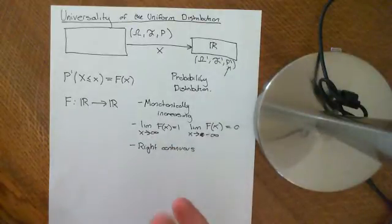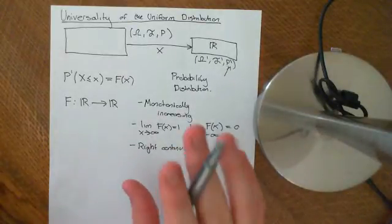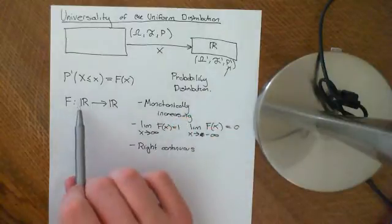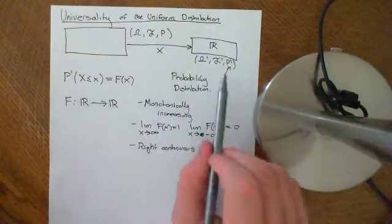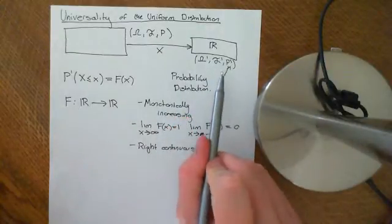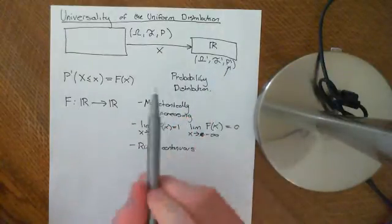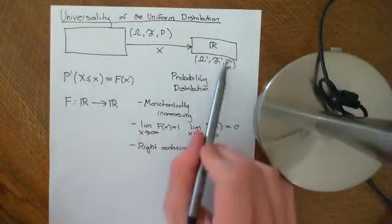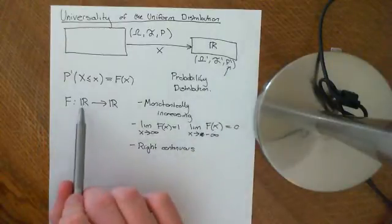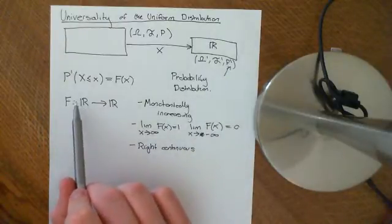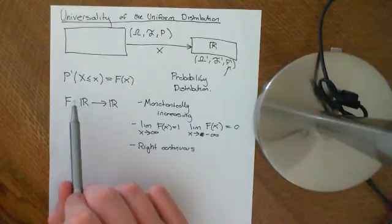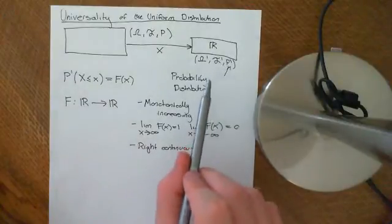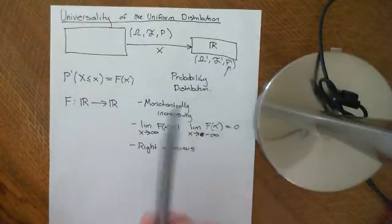Now that we understand that, we understand the difference between a CDF and the actual probability distribution, and we understand how we can go from a distribution to get a CDF, and we can go from knowing the CDF back to knowing the probability distribution.